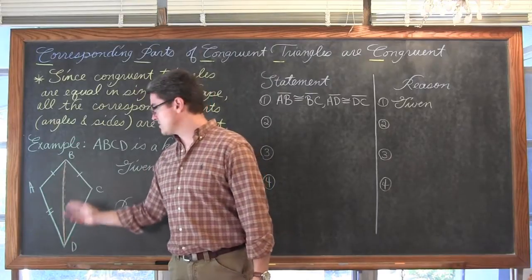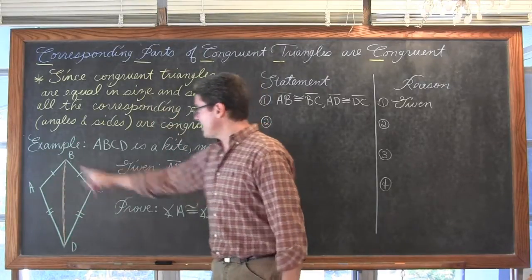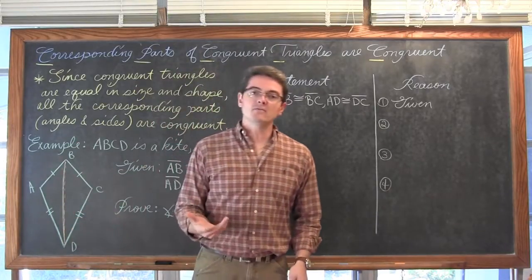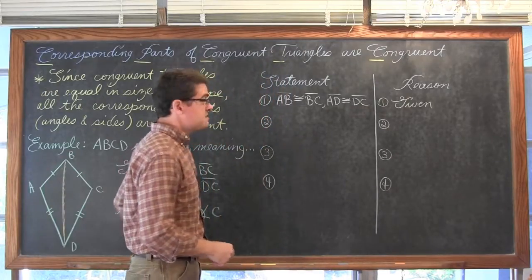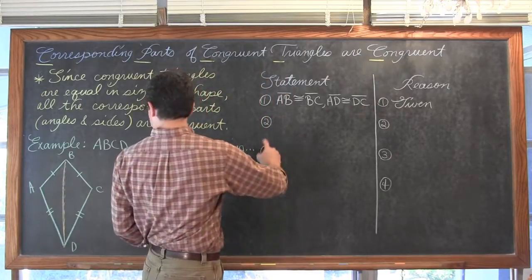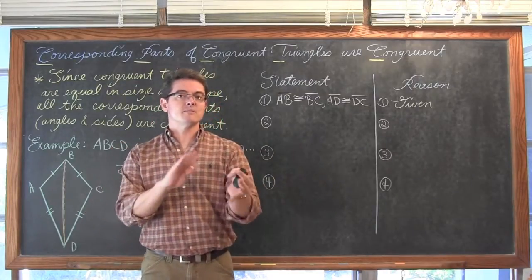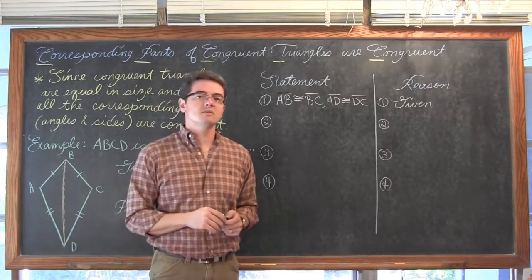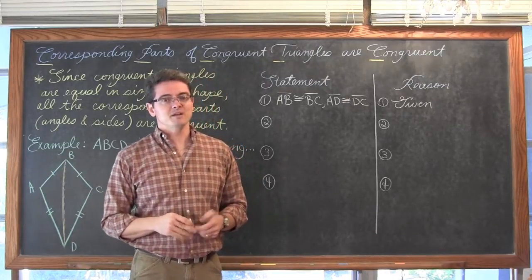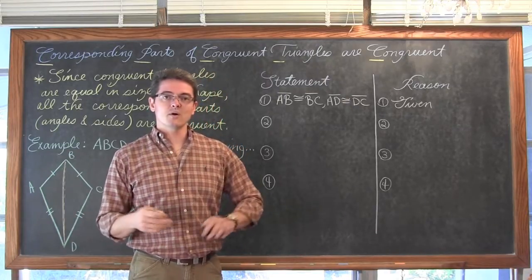Well if that one side is helping to set up both triangles, then that one side of course needs to be written that it is congruent to itself. So we are going to write that segment BD is congruent to BD, and any time you have the exact same thing on both sides of an equal sign or congruency symbol, that is the reflexive property of congruence or equality.